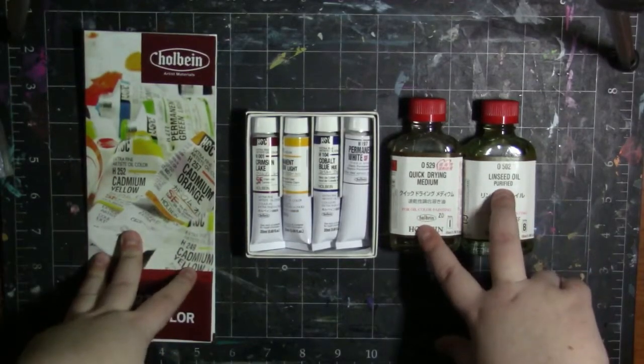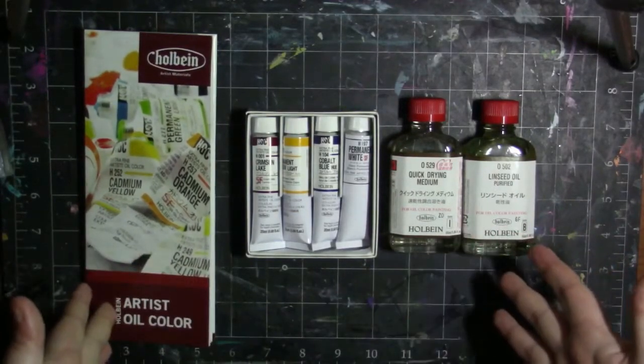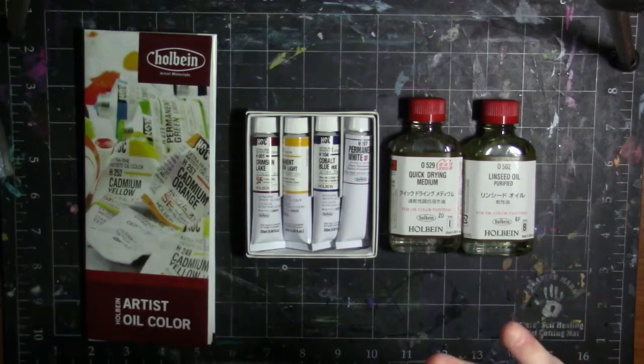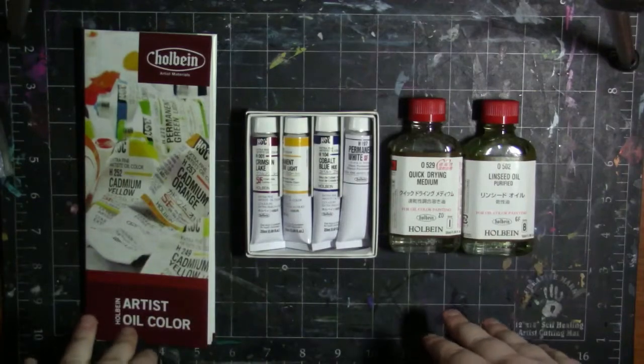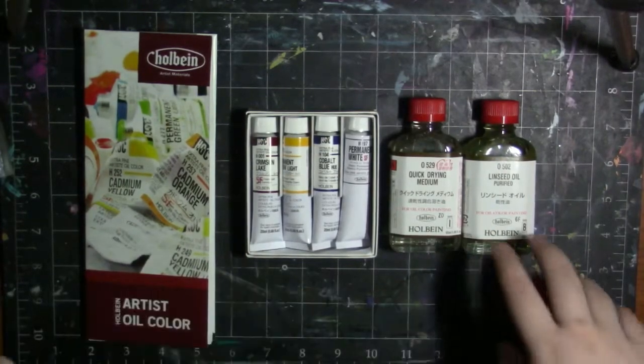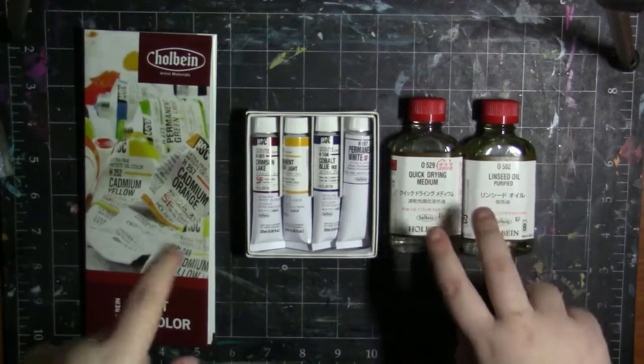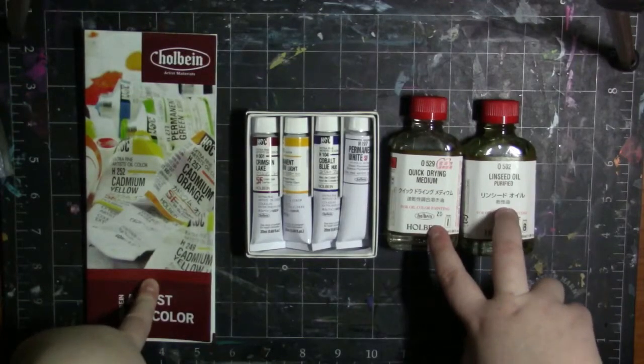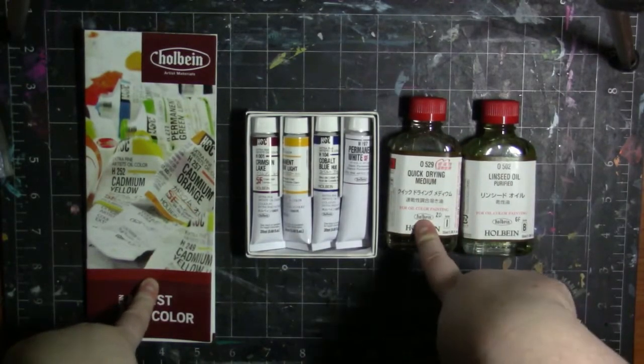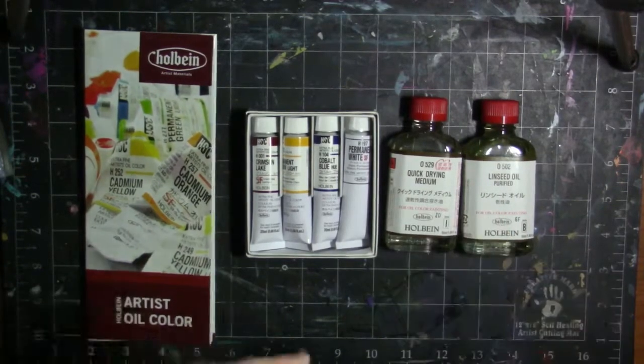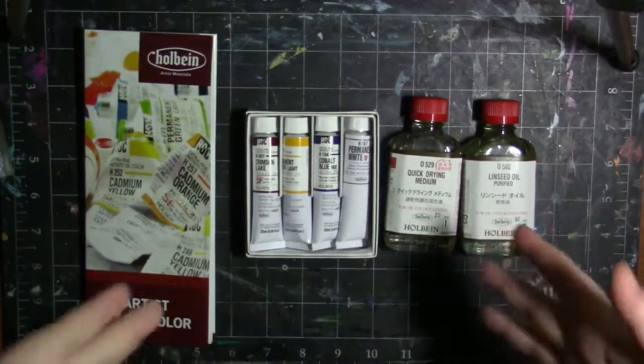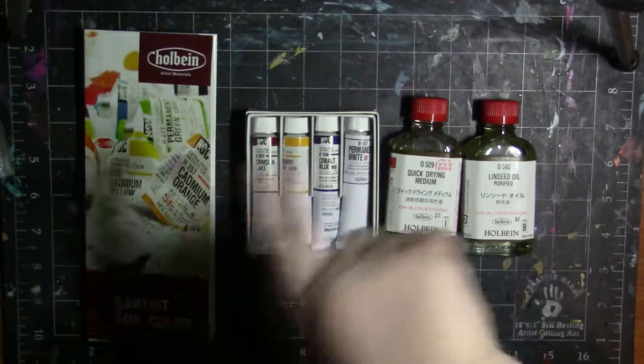So now let's get into the swatches. I'm not going to be swatching it over black, just because I don't really want to wait for paint to dry. But I will be talking to you about the different permanency ratings and the opacities of all of these. And I'm going to be using these in the swatches as well because I can't guarantee I'm going to use both of these in the painting. So let's head over to the swatches and I hope to see you over there.